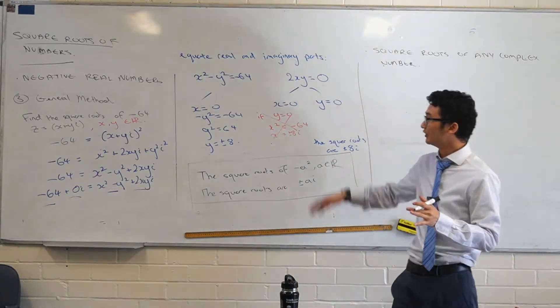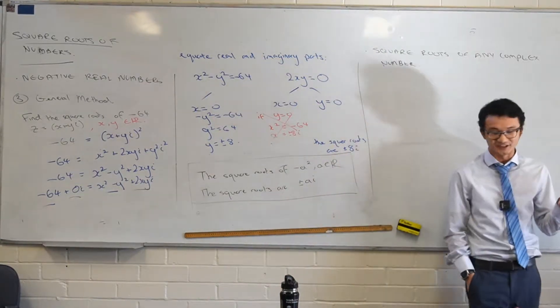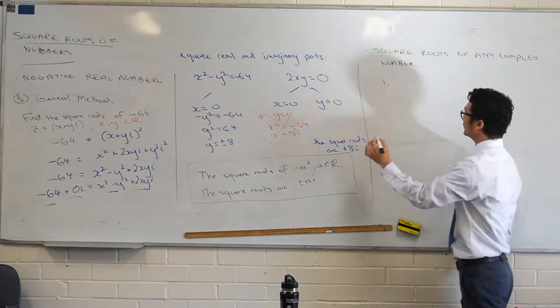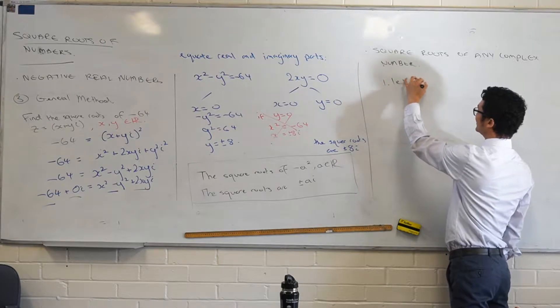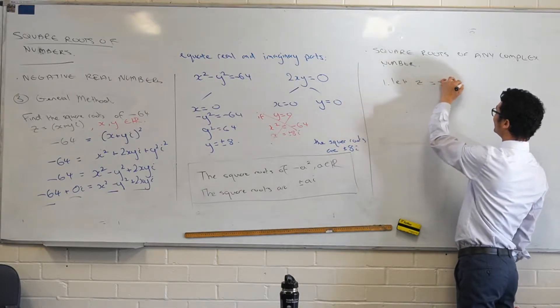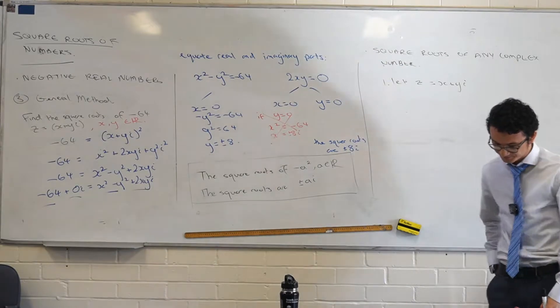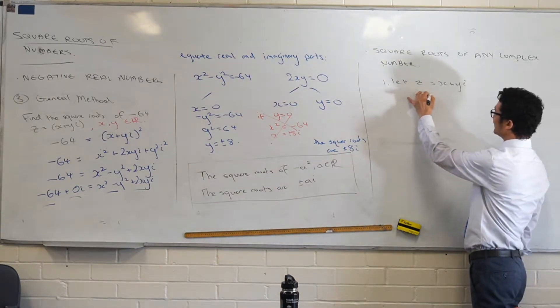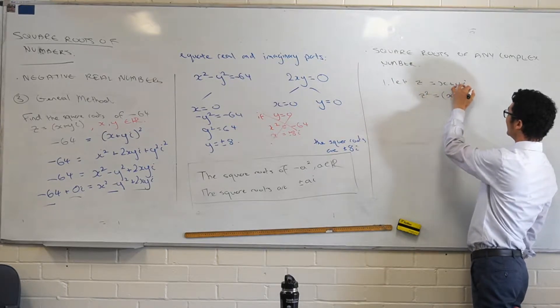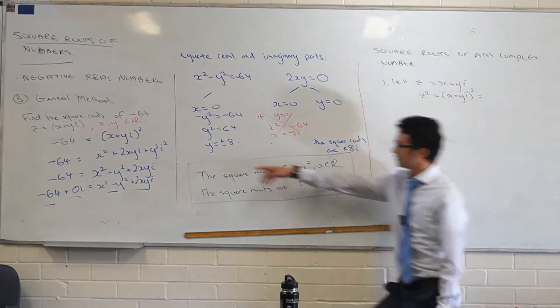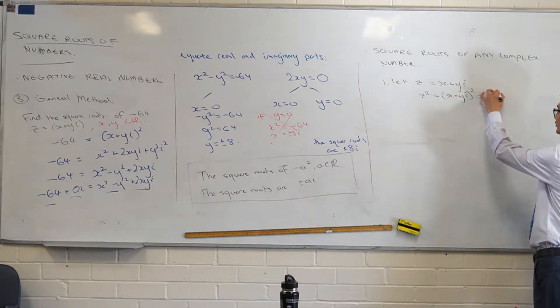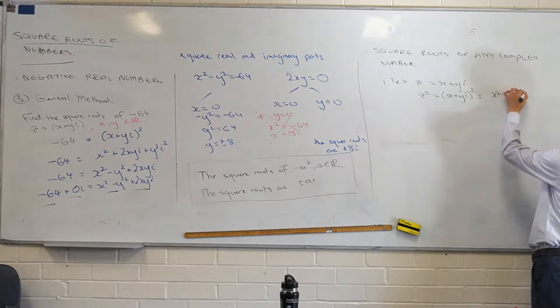The square roots of any complex number use the general method here. The general method has three steps. The three steps are: we let z equal to some complex number, and we recognize that z squared is going to be, after we expand it, we get this step over here. And remember, why do we rearrange it in that way? Because it lets us equate real and imaginary parts very easily. So that's step two: equate real and imaginary parts.